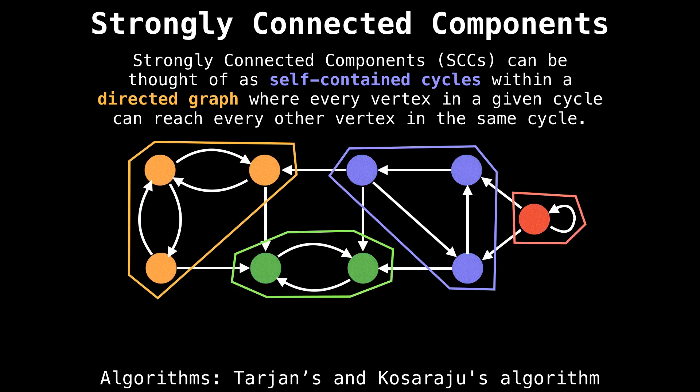When looking at strongly connected components, we're looking for self-contained cycles within the graph where every vertex in a given cycle should be able to reach every other vertex in that same cycle.